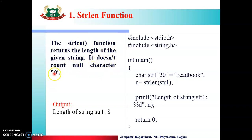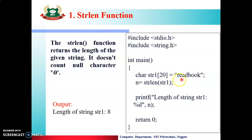It doesn't count the null character. तो हमने देखा था कि suppose यह हमारा string है तो automatically by default यहाँ पर slash 0 आता है, that is null character. Means वो हमारा string terminate हुआ है, हमारा string end हुआ है वो बताता है। वो भी एक character by default यहाँ पर include होता है। लेकिन यह string length function उसको count नहीं करेगा। तो सिर्फ जो original alphabets होते हैं हमारे string में उसको ही count करेगा। printf, scanf functions use करने के लिए stdio.h header file हमने include की है।